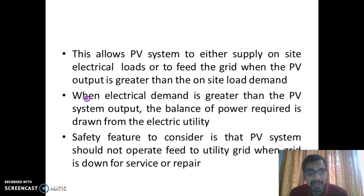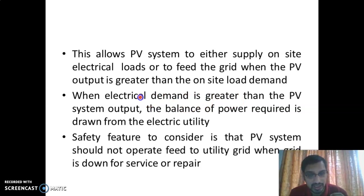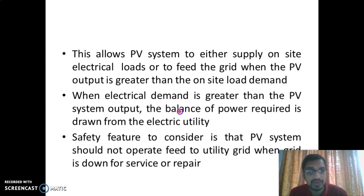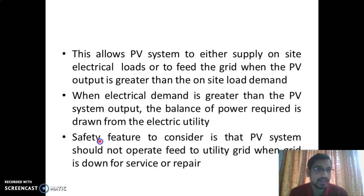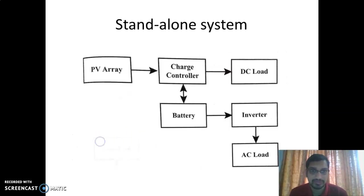When the electrical demand — meaning the consumer's own demand — is greater than the PV system output, the excess power required is drawn from the electric utility. These are the main points of the grid-connected solar system.